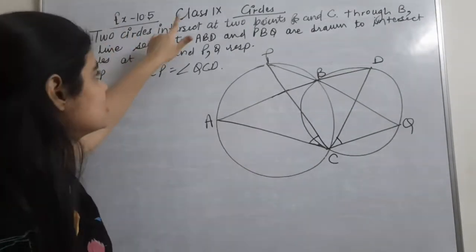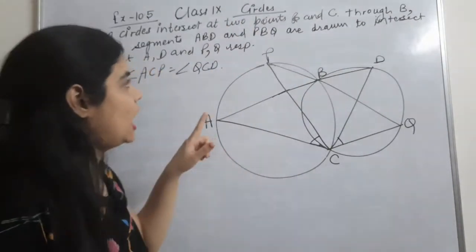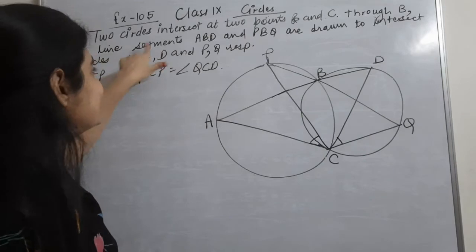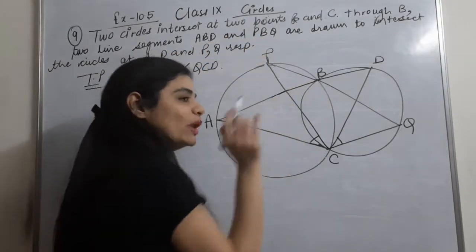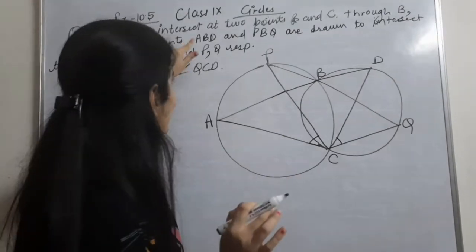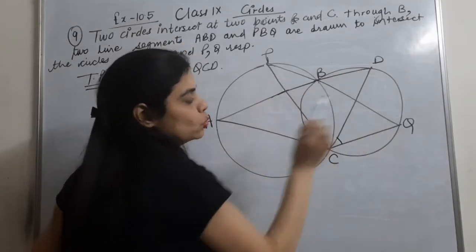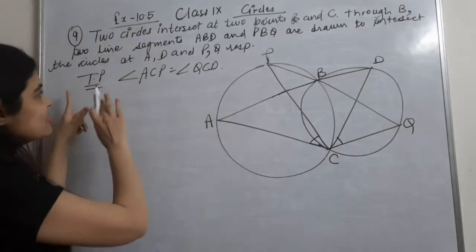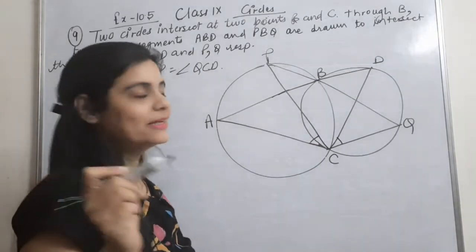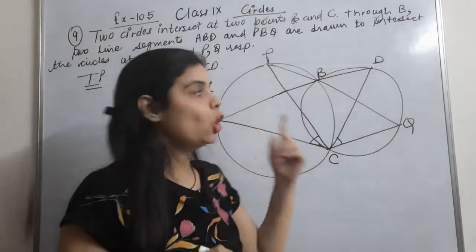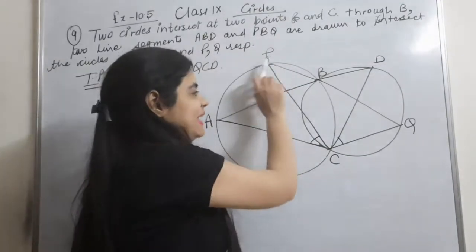Two circles intersect at two points B and C. Through B, two line segments ABD and PBQ are drawn to intersect the circles. ABD intersects the circles at A and D, and PBQ intersects the circles at P and Q.